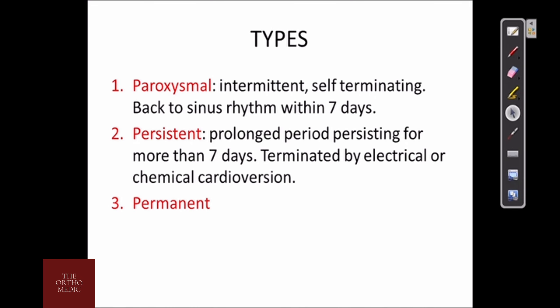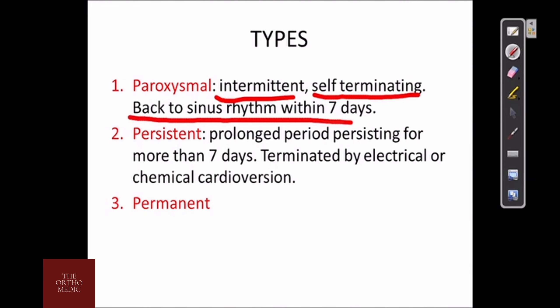What are the types? The types are paroxysmal, persistent, and permanent. Paroxysmal is intermittent, which is self-terminating, and it reverts back to sinus rhythm within seven days.